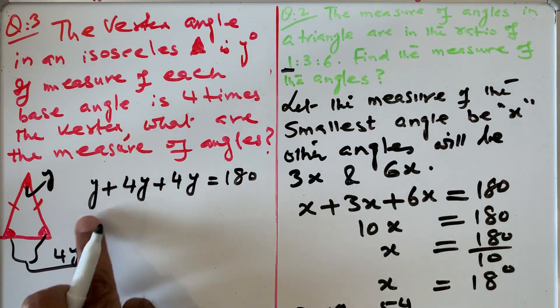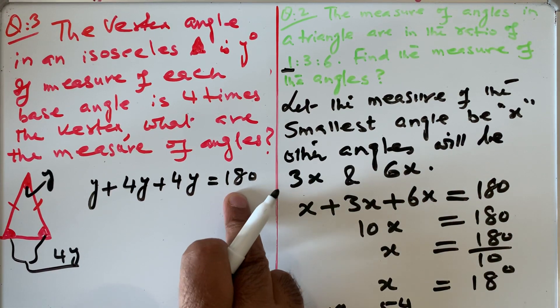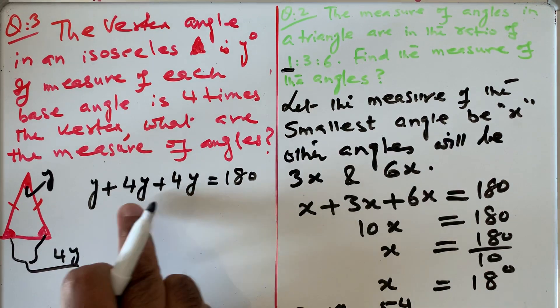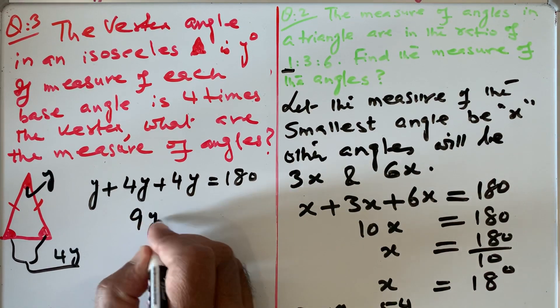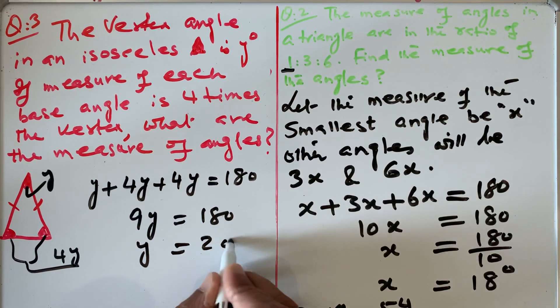So what are the angles? y, 4y, and 4y. So all together is 180. And then I add them up: 4y, 4y is 8y, plus 1y is 9y. So 9y equals 180. So y equals 20 degrees.